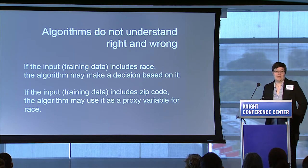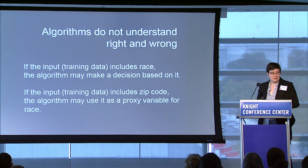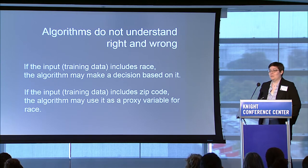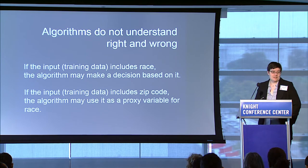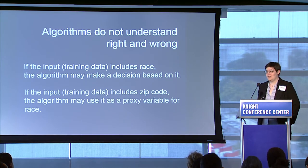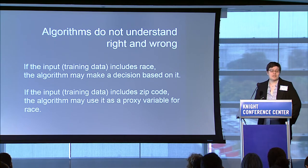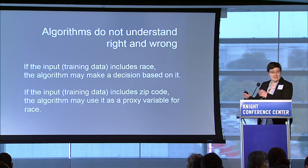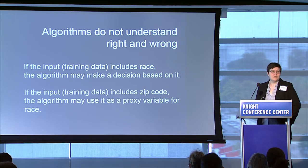We can't rely on the algorithms to do the right thing. They don't have any inherent understanding of morals or what is right and what is wrong — it's up to us to explain and codify that. So if the training data includes race, the algorithm is free to explicitly make a decision based on race. If the input includes zip code or something else that correlates with race, then the algorithm is free to figure out race and then make an explicit determination based off of that. So it's up to us to do good evaluation to try to fix this problem.